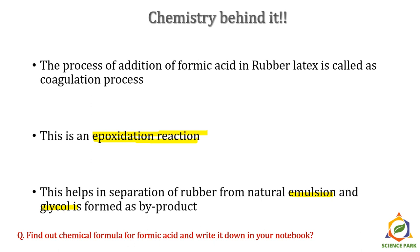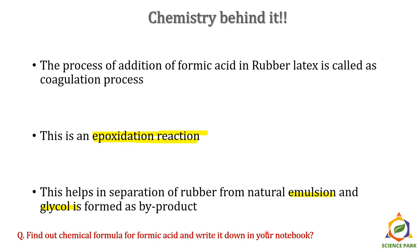Now I have a question for all of you: find out the chemical formula for formic acid and write it in your notebook. It would be great if you can also find out some important properties of formic acid. We will discuss it during our discussion period. Now let's get to know more about the vulcanization process in rubber industry. Natural rubber is soft, sticky, and has less tensile strength. To make it more strong, tough, and lasting, it is vulcanized.